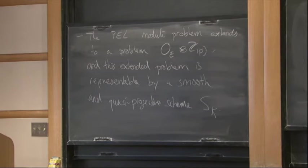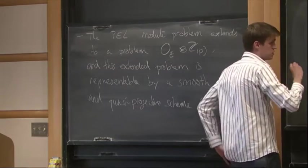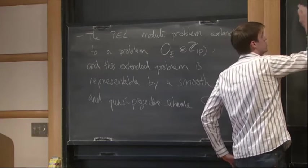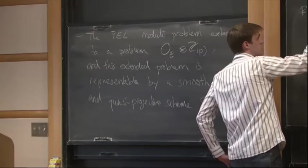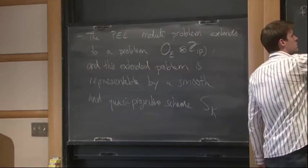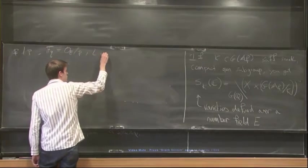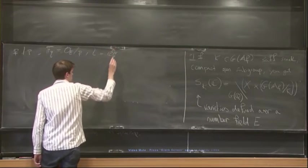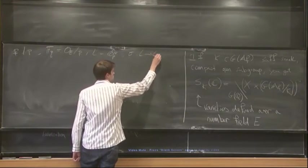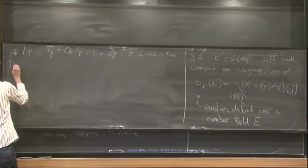So to define the Newton stratum I need to define isocrystals. So let me first introduce some notations. So FQ. So first I pick a prime P dividing P. So this P is a prime of this reflex field. And FQ is going to be the residue field. And L is the completion of the maximal unramified extension of QP. And sigma is the arithmetic Frobenius on L.